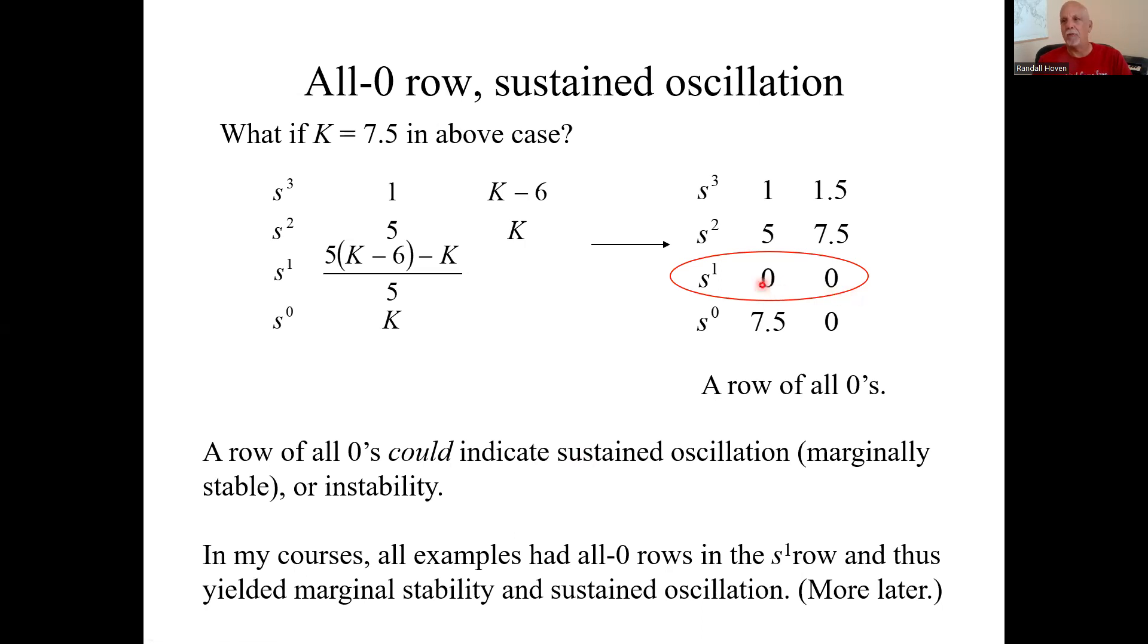And when you have poles right on the imaginary axis, but they're simple, not repeating, you'll get sustained oscillation related to that pair of poles. If you have no other poles in the right half of the complex plane, that's the worst that will happen. You get sustained oscillation, meaning marginal stability. Now we can ask, what is the frequency of that sustained oscillation?